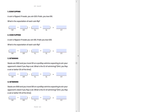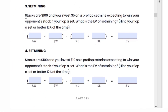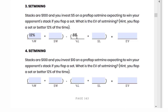We're going to do number three and four in the easy section. Starting with question three: stacks are $100 and you invest $5 on a preflop set mine, expecting to win your opponent's stack when you flop your set. What is the EV of set mining here, keeping in mind that you flop a set or better 12% of the time? Well, percentage W is 12%. Percentage L is 100 minus 12, so 88%. When we win, we're winning their stack — $100. And when we lose, we're investing $5, and if we don't flop our set, we get out of there, so we lose that $5.